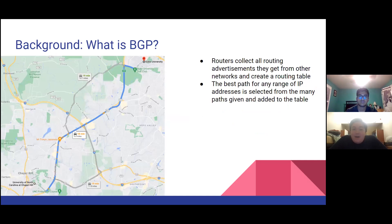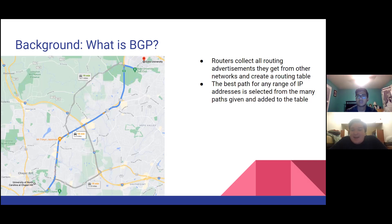A router like the one in your home collects all of the routing advertisements it receives and creates a routing table from them, except only the best route for any given range of IP addresses makes the cut. Routers have a built-in selection algorithm that uses metrics like the length of the path to find the best one. This is similar to how Google Maps found the best route from UNC to Duke, despite there being many different ways to get there. The presence of multiple paths is important for the main focus of our project, Anycast Networks.